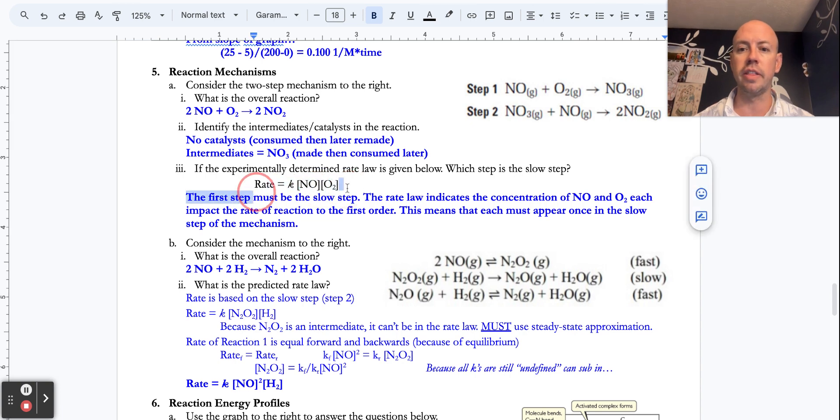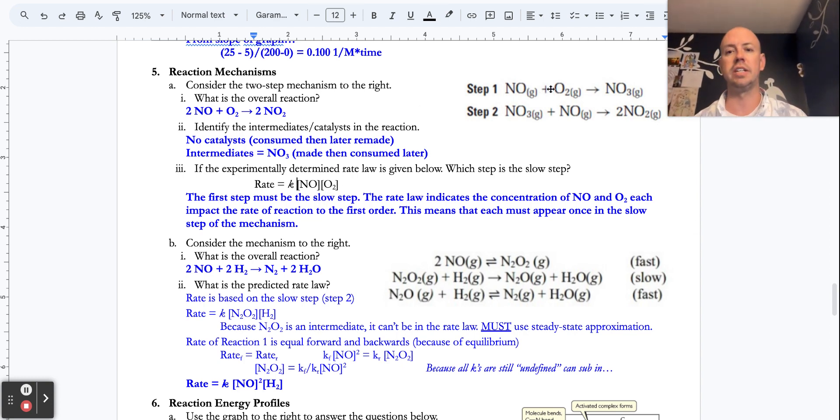If we are told that the rate law is rate equals, remember rate laws are always rate equals, it's an equation for rate, K times this times that, or this to the first times that to the first. That means our slow step includes 1 and exactly 1 NO and 1 and exactly 1 O2, which is what step 1 does. So the rate law is always determined by the slow step.